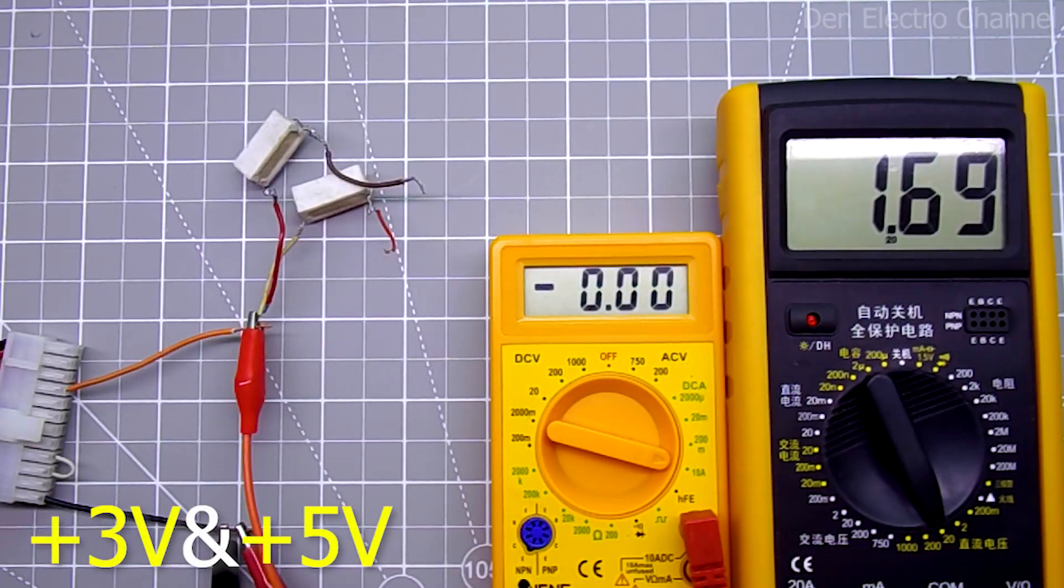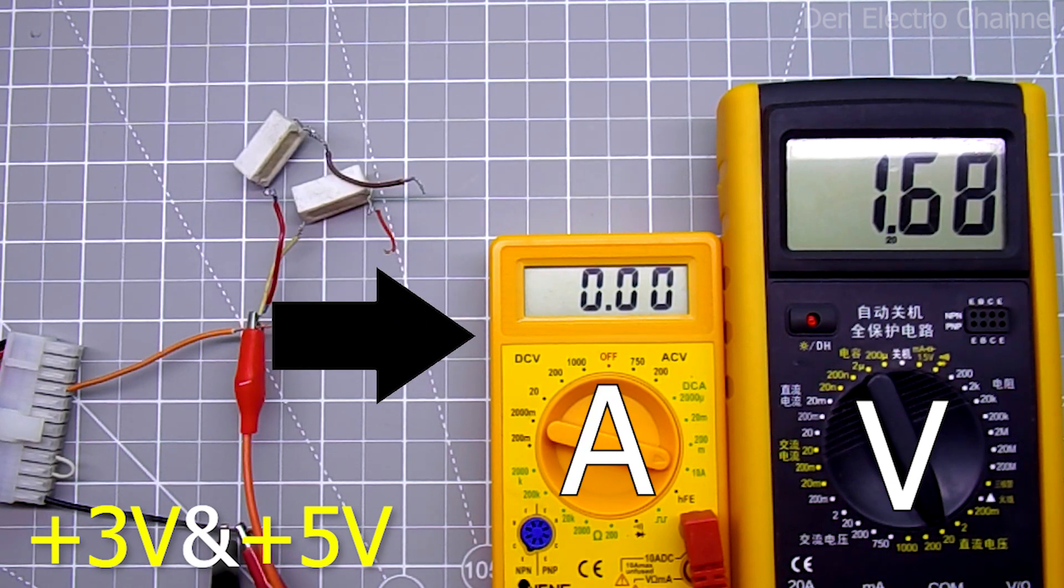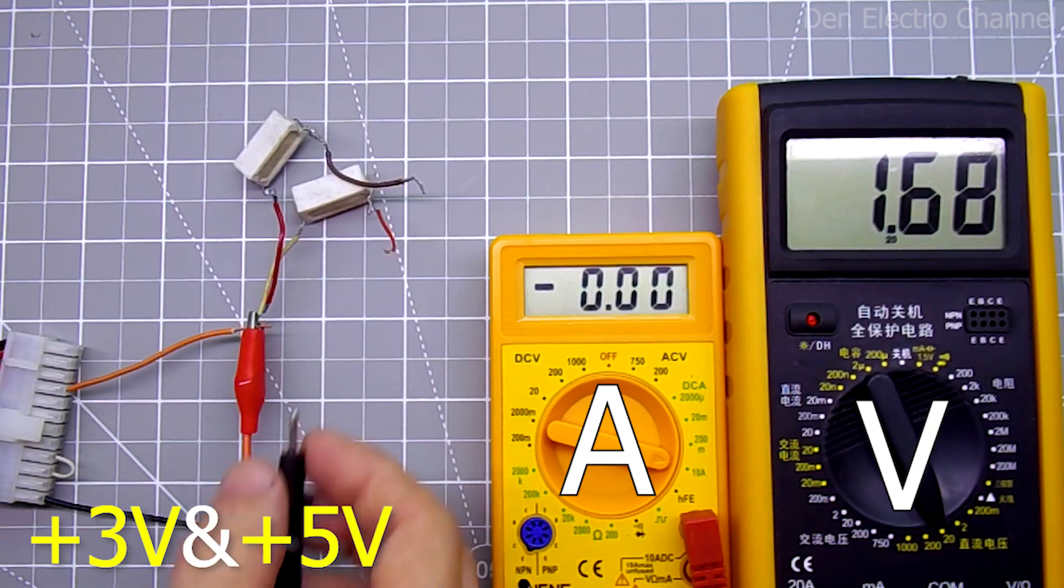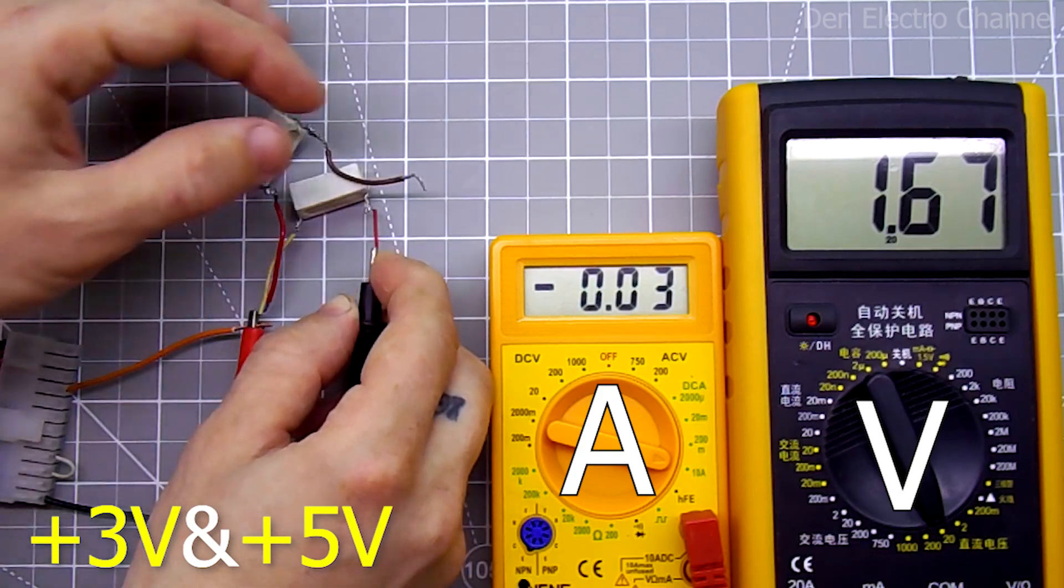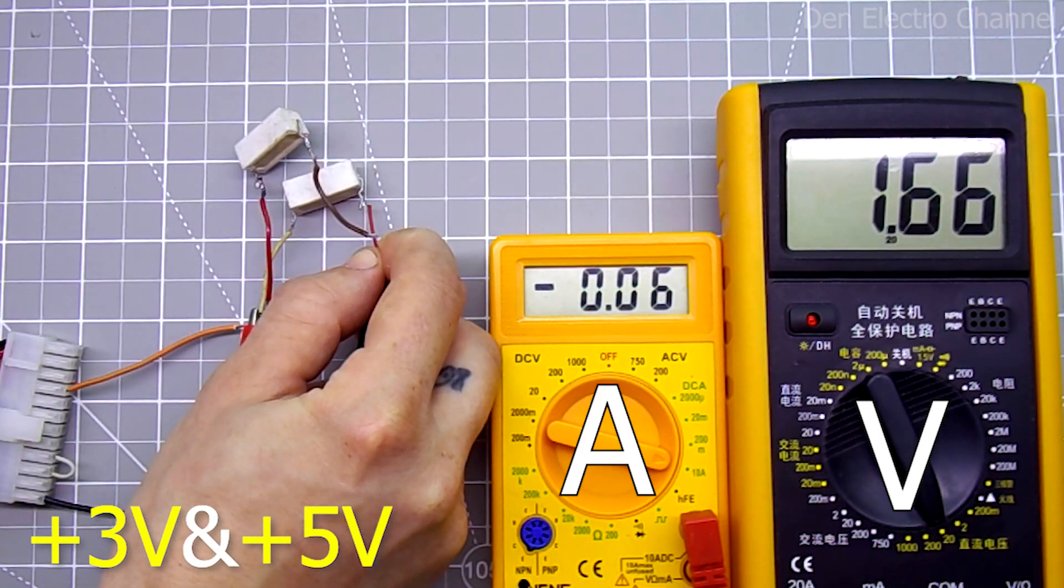First, I will start with low voltage measurement between 3 volts and 5. I connected the positive probe of the multimeter to 5 volts and the negative to 3. This multimeter will show voltage and this one will show load current. I will use two resistors as a load. First, I connect one. Current 30 milliamps, voltage dropped just a little. Now the second, current 60 milliamps, voltage has hardly changed.